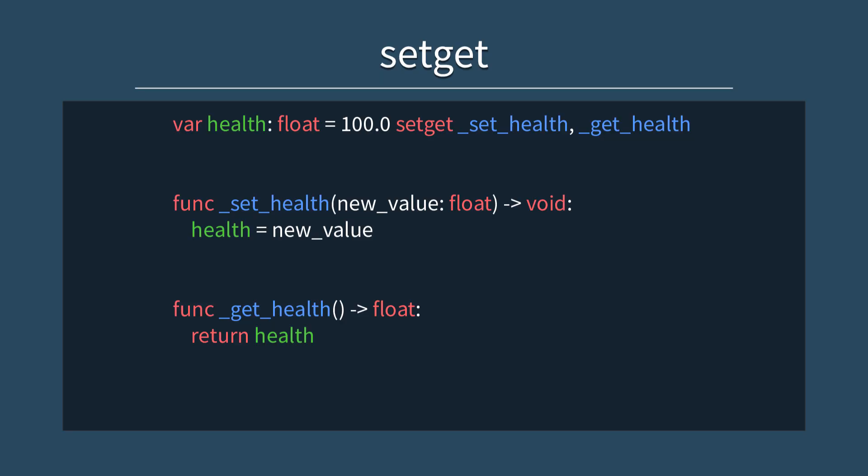And that's a quick introduction to getters and setters in GDScript. There's not a whole lot to them, but they can come in handy from time to time when you want to maintain certain constraints in your codebase, be aware of changes in your data, etc. I'll link to the official documentation for them in the description.